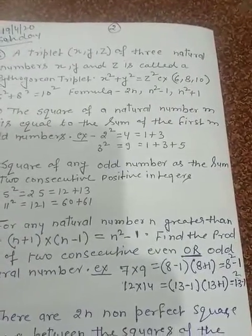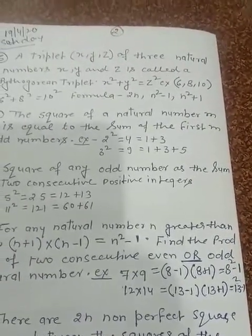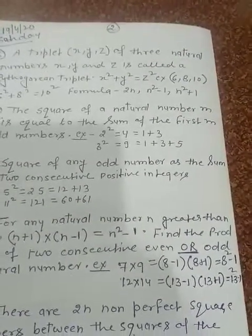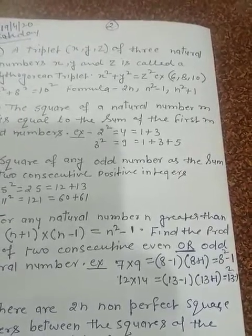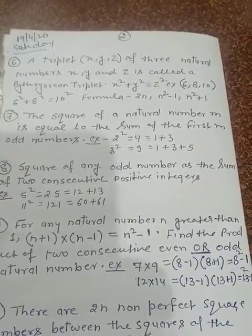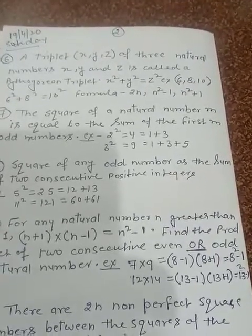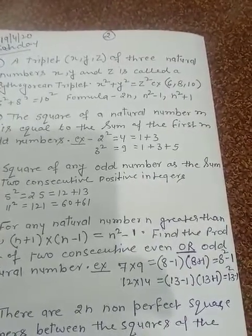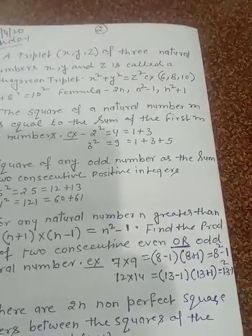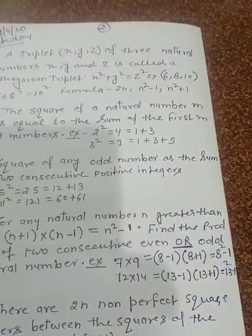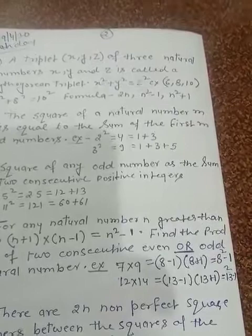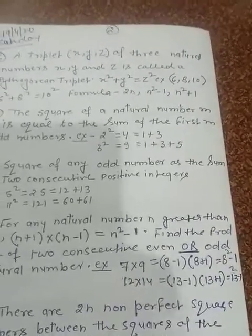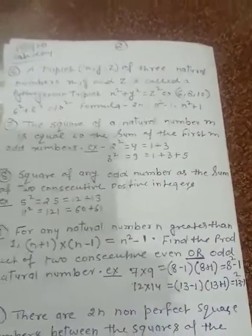Here we use another formula to find out another triplet numbers: 2n, n² - 1, n² + 1. Now, how to prove this formula? Here, 6 is the number given. When we take n = 3, 2n = 6 and n² - 1, n is 3, 3² is 9 minus 1 is 8, and 3² is 9 plus 1, that is 10.